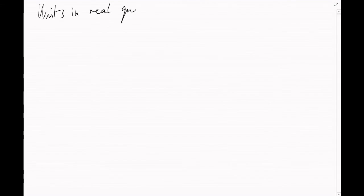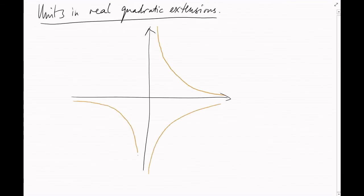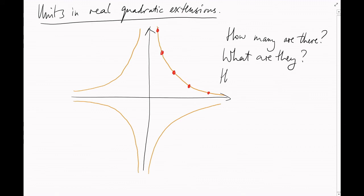But now what about real quadratic fields? Elements of norm plus or minus 1 lie on these hyperbolas, and there's no reason why there should only be finitely many of them. So what are they? How do they behave? Next video we'll see another surprising application of Minkowski's theorem that'll answer a lot of these questions for us.